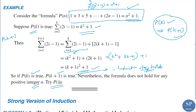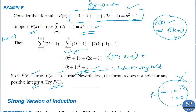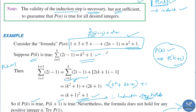For example, P(1) is not true because P(1) means 1 equals 1 squared plus 1, that is 1 equals 2, which is not true. So P(1) is wrong. This example verifies that the induction step being true alone does not guarantee the formula is correct — the basis step is also essential.